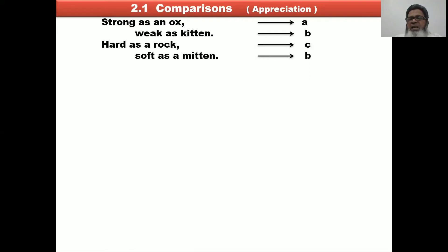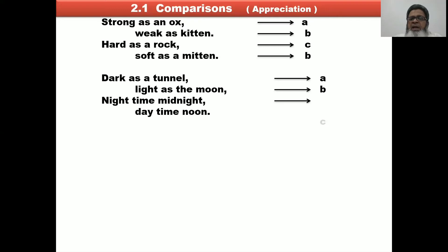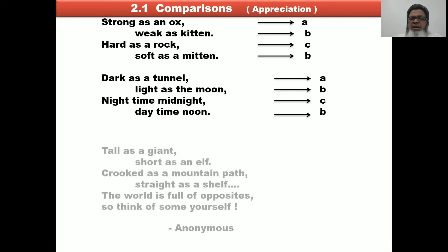The fifth stanza rhyme scheme is A, B, C, B. Next, the sixth stanza: 'Dark as a tunnel' — label A. 'Light as the moon' — label B. 'Nighttime, midnight' — sound changes, label C. 'Daytime, noon' — 'moon' and 'noon' share the same sound, so label B. The rhyme scheme is A, B, C, B.